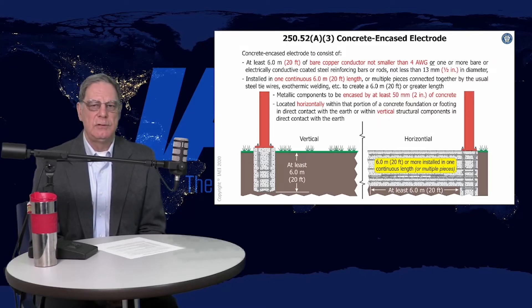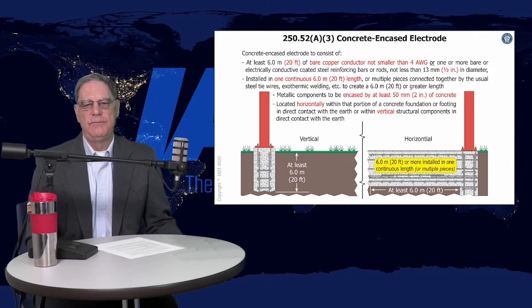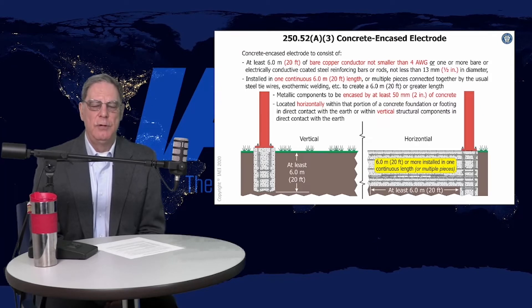One of the things about a concrete encasement electrode is that it's really the volume and surface area of that concrete and the volume of earth that makes the electrode. The rebar and the wire inside is part of that system that lets you connect the conductive concrete that typically has moisture around it to your electrical system.